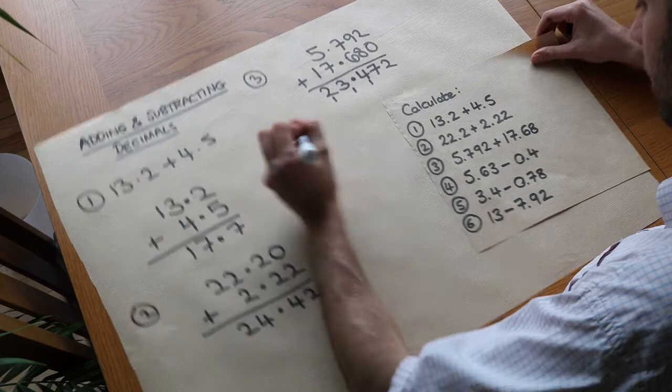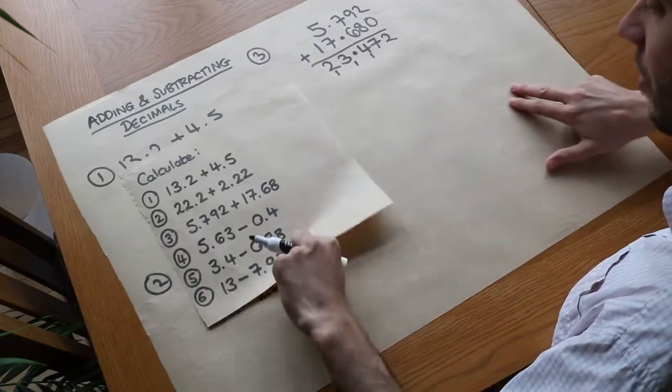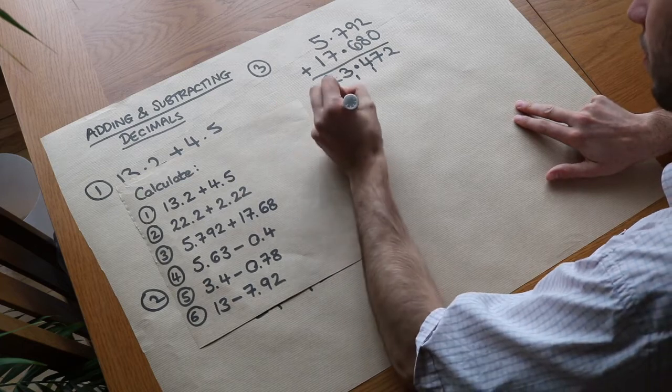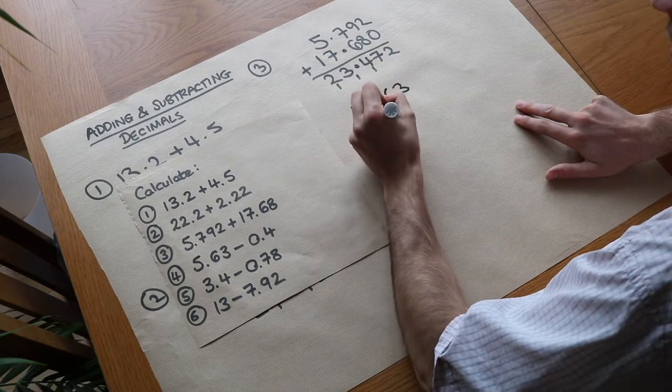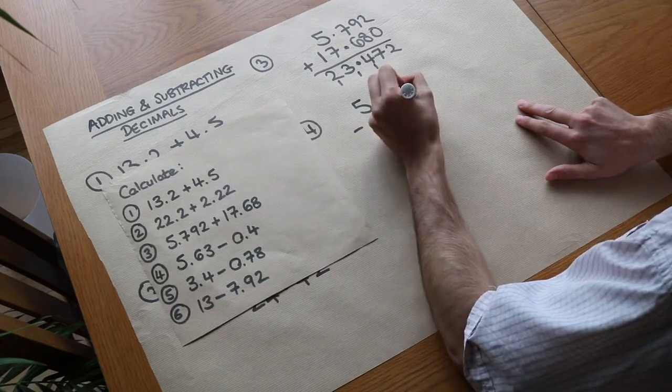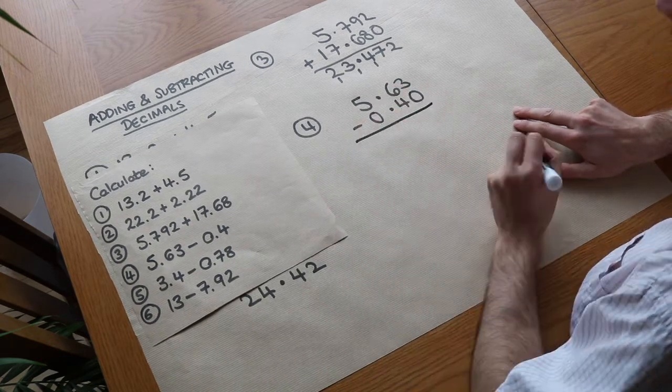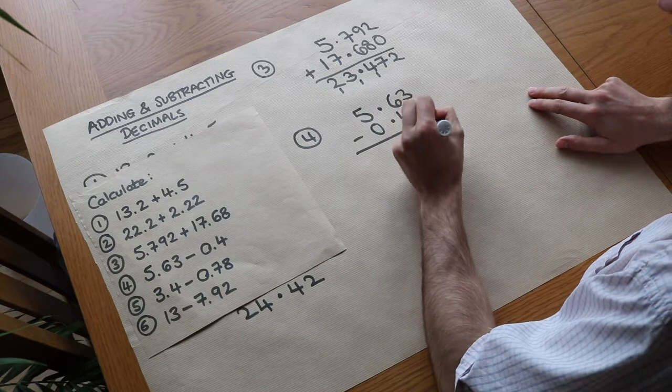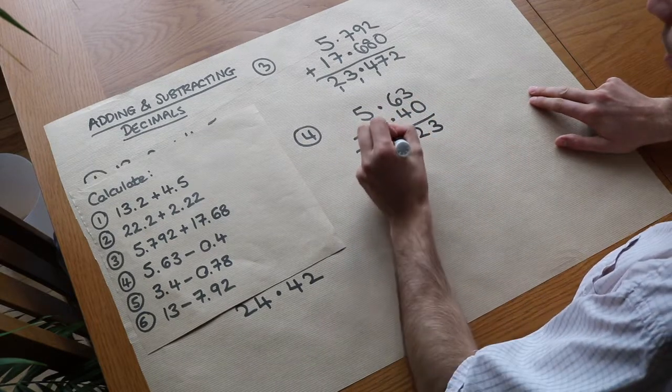Now what about subtraction? It's a tiny bit more complicated. This time we do exactly the same thing, so we've got 5.63 subtract—make sure the decimal points are in the same place—0.4. And again, that gap we can just fill in with 0; we've got 0 hundredths there if it's not specified. We subtract in the same way: 3 minus 0 is 3, 6 minus 4 is 2, put the decimal point there, 5 minus 0 is 5.